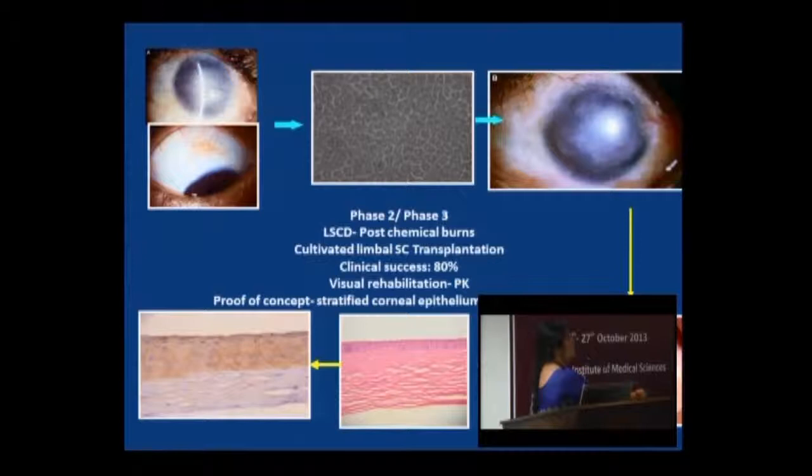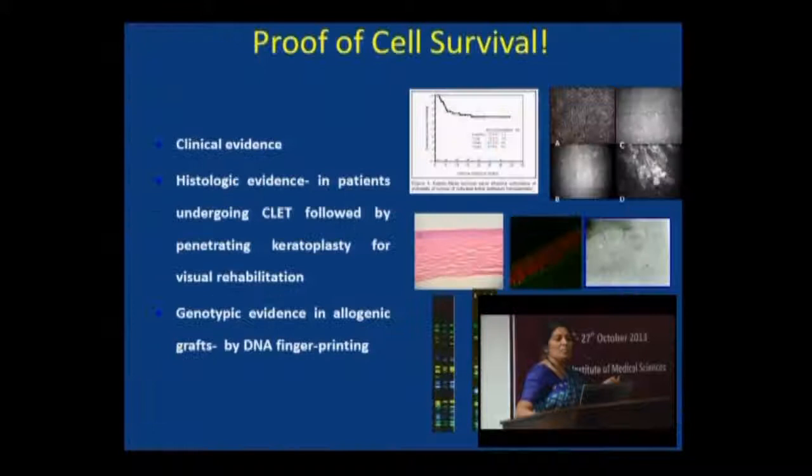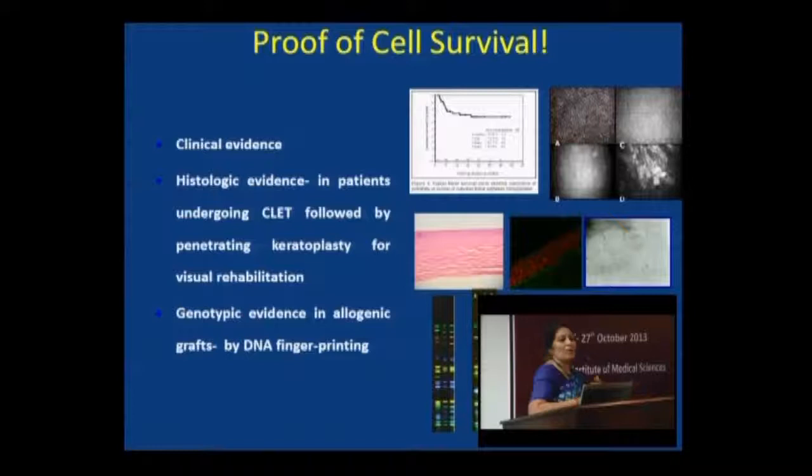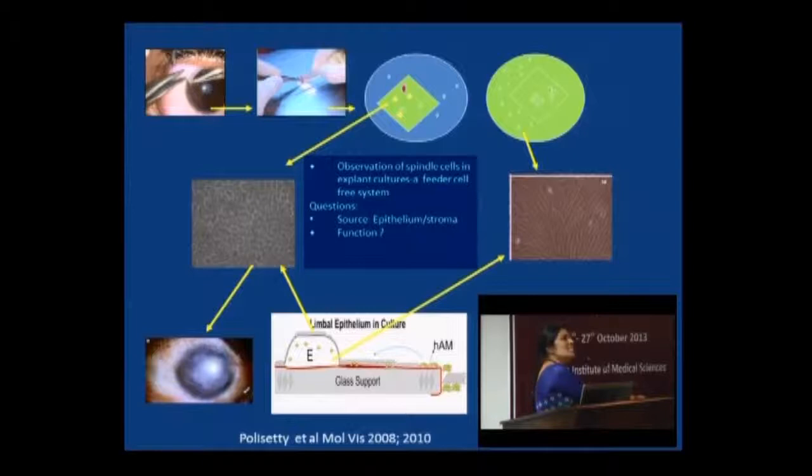To summarize: we took the limbus from the good eye, made it into a sheet of epithelium, and transplanted it to the ocular surface. If the patient's stroma is damaged, we did a corneal transplantation. The proof of concept — that cells have survived — is provided through clinical evidence, histological data, ultrastructure, in vivo microscopy, and we even did genotyping to show that in allogenic cases the cells were donor-derived.